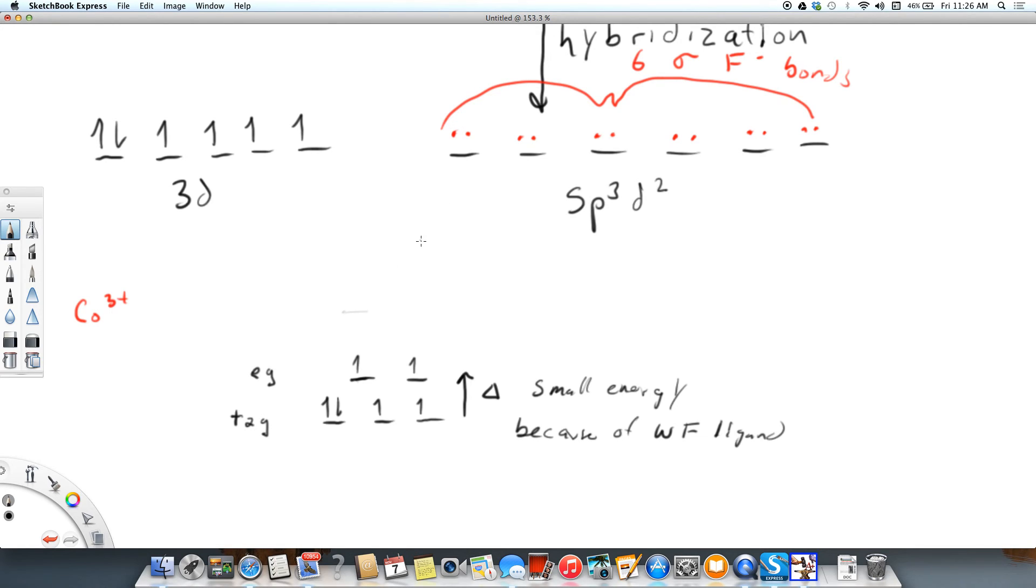What we say in this case is that you can see this structure matches this structure. We have four unpaired electrons just like we do here. So we can see that the crystal field theory and the valence bond theory agree with each other.